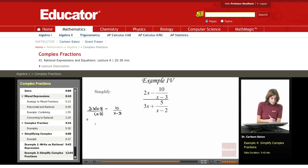I'm going to multiply both the numerator and the denominator times x minus 3. This is going to give me 2x squared minus 6x over x minus 3 minus 10 over x minus 3, which is then going to come out to 2x squared minus 6x minus 10 over common denominator of x minus 3. I'm just subtracting.